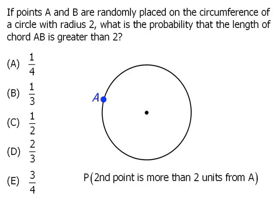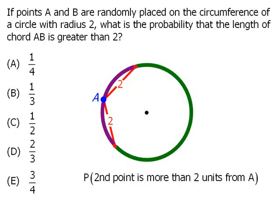To answer this question, let's first examine points on our circumference that are exactly two units away from A. They are here and here. This means that any point along our purple arc will be less than two units away from A. This also means that any point along our green arc will be more than two units away from point A.